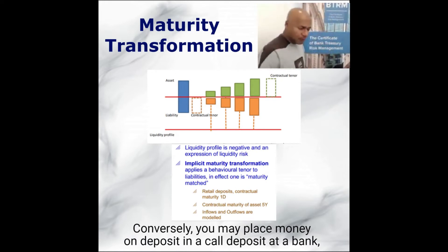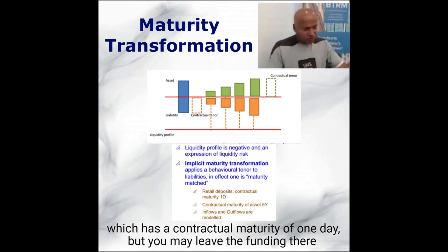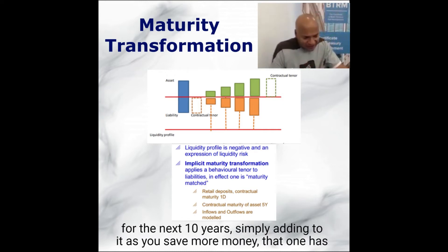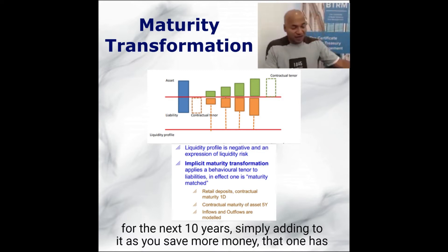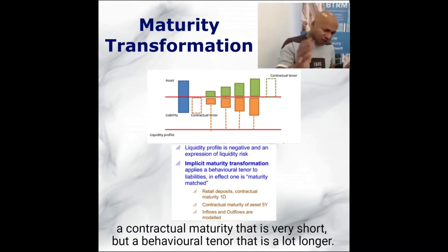Conversely, you may place money on deposit in a core deposit at a bank, which has a contractual maturity of one day, but you may leave the funding there for the next 10 years, simply adding to it as you save more money. That one has a contractual tenor that is very short, but a behavioral tenor that is a lot longer.